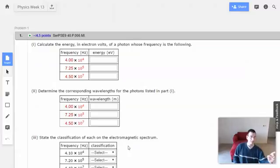Hello, week 13, problem 1. Calculate the energy in electron volts of a photon whose frequency is the following. Then determine the corresponding wavelengths for the photons listed above and state their classifications.